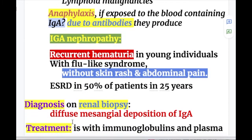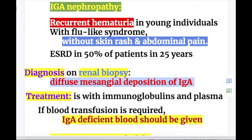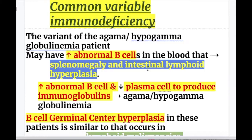These patients may have anaphylaxis if they are transfused with blood containing IgA. Treatment is with immunoglobulin and plasma. If blood transfusion is required, IgA-deficient blood should be given, because if the blood contains IgA, the patient will have an anaphylactic reaction.